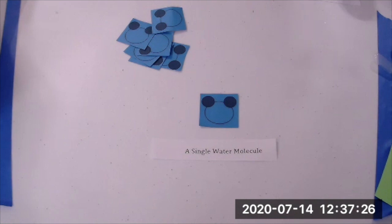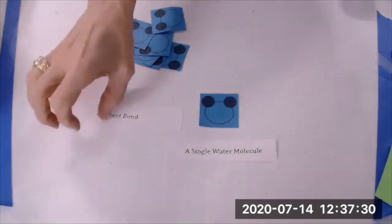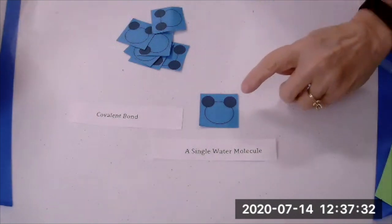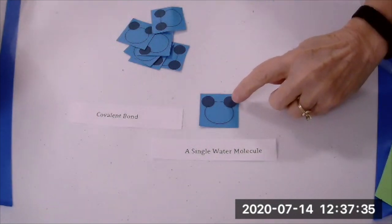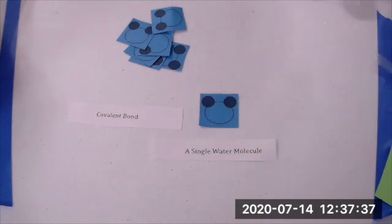The hydrogen and oxygen molecules are covalently bonded. This means that they share electrons. Oxygen shares an electron with hydrogen and with this hydrogen.